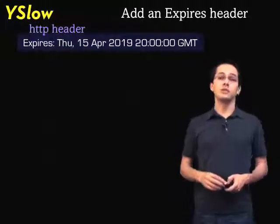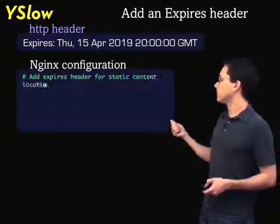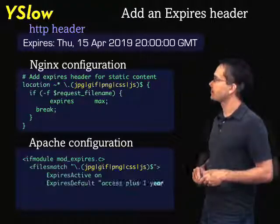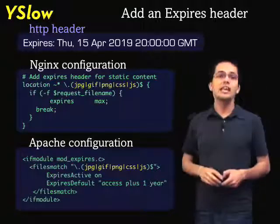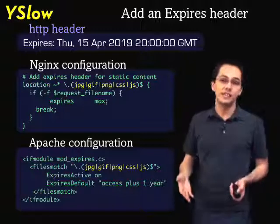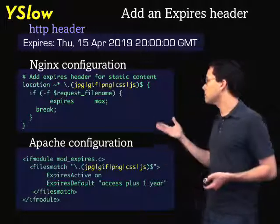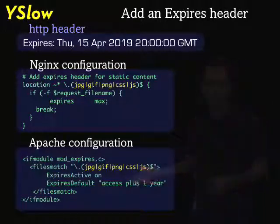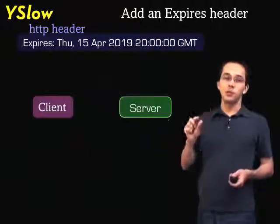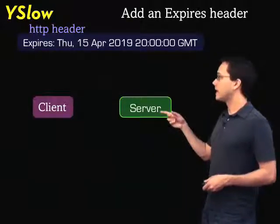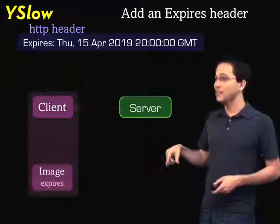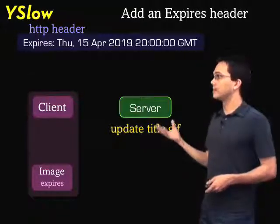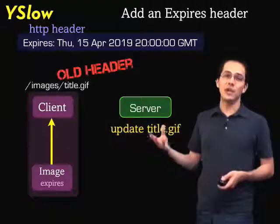Adding this expires header is usually something you do on your front-end web server. Here's how you might do it with Nginx, and here's how you might do it for Apache. As you can see, we're checking whether the incoming request is an image, a style sheet, or a JavaScript. If it is, with Nginx we're setting the expires header to the maximum value, and in Apache we're setting it to a year from now. If you've done this before, you probably realize there's a small problem: if a client stores an image in its local cache but then we update the image with a new deployment, the client might load that old image — how does it know to fetch the new one if the expires date is far in the future?